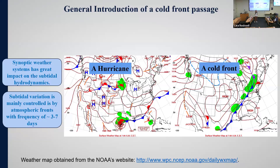Sometimes the changes induced by cold front passages are even larger than the tidal variation. Looking at surface weather maps — one for a hurricane, one for a cold front — we can see that even though wind intensity is less during a cold front compared with a hurricane, the cold front has a larger spatial scale. Originating from a low pressure system in the Arctic zone, the front system can extend across the whole US continent. Before and after a cold front passage, we experience dramatic changes in atmospheric forcing: air pressure, humidity, temperature, wind direction, and wind magnitude.